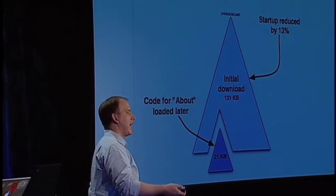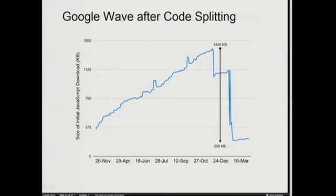Three or four lines of code reduced the startup by 13%, and I did that in about a minute. Now imagine what happened when we gave code splitting to the Wave team. This is what happened to their startup size a few weeks after we gave it to them — in preparation for the launch at I/O earlier this year, they reduced their startup size by a factor of seven. It went from 1,400K uncompressed to 200K uncompressed. When you actually serve this JavaScript you compress it, so 200K gzipped is about 80K, which is about the size of a typical JPEG that you would include in any HTML page without thinking twice about it. Very rich functionality and a very small download — that is what I call a bargain.